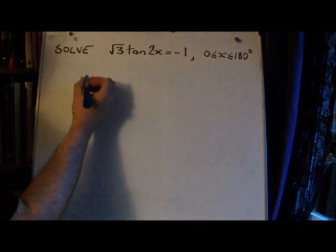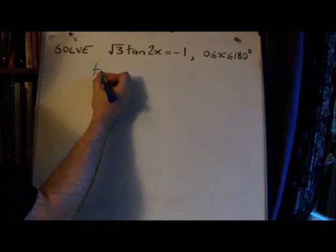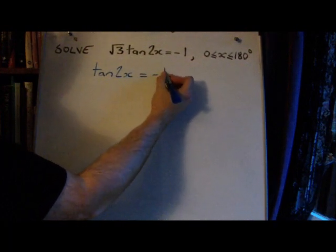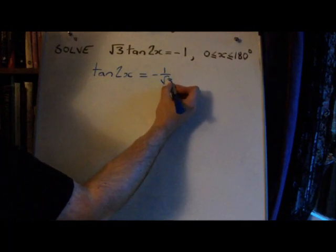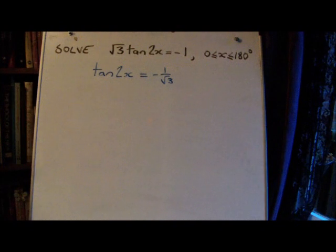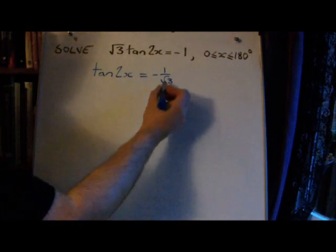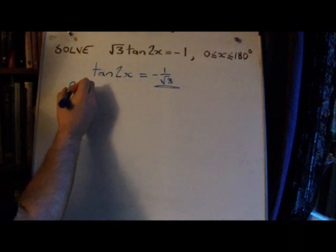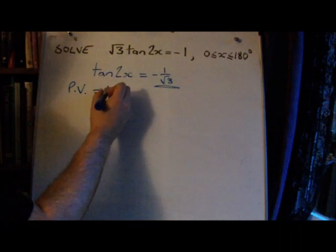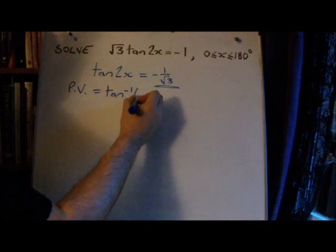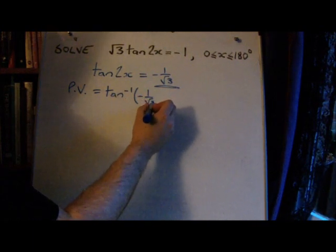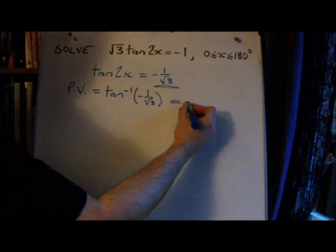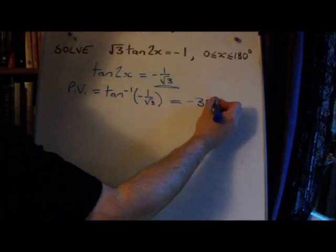We'll begin by making the equation into a form that we can deal with as we've done before. So we can make this tan 2x is minus 1 over √3. We're going to now find the principal value associated with this. So the principal value is inverse tan of negative 1 over √3. And your calculators, or your knowledge, will show you that this is minus 30 degrees.